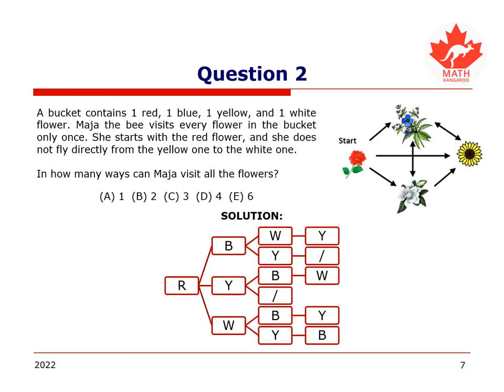Here is the solution. Recall that Maya the bee visits every flower in the bucket only once. She starts with the red flower, and she does not fly directly from the yellow one to the white one. We need to find in how many ways Maya can visit all the flowers.